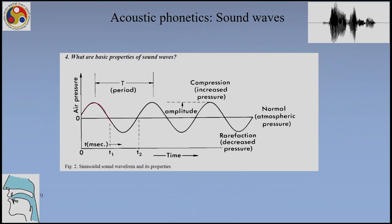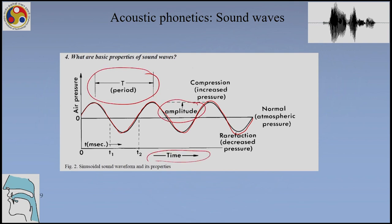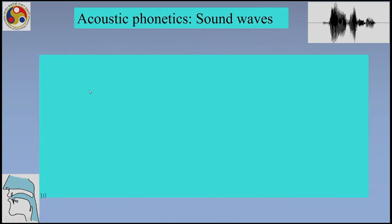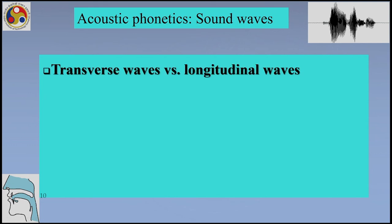If there is no medium, there will be no sound. This is the compression and rarefaction that we talked about: compression, rarefaction, compression, rarefaction — this is the fluctuation on which the travelling of air depends. We will now study what is a period, what is amplitude, and what is the relationship between time and all these other things. When we study sound waves, we have to understand how sound waves are different from other types of waves — sound waves require a medium, which is why they are mechanical waves, different from electromagnetic waves.